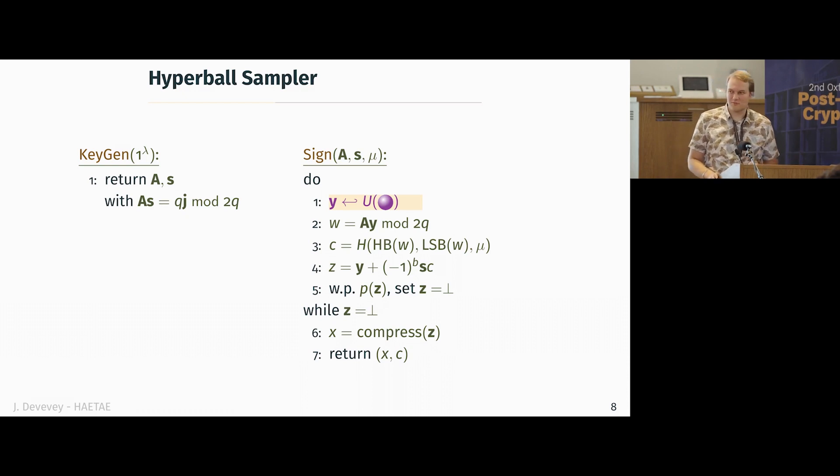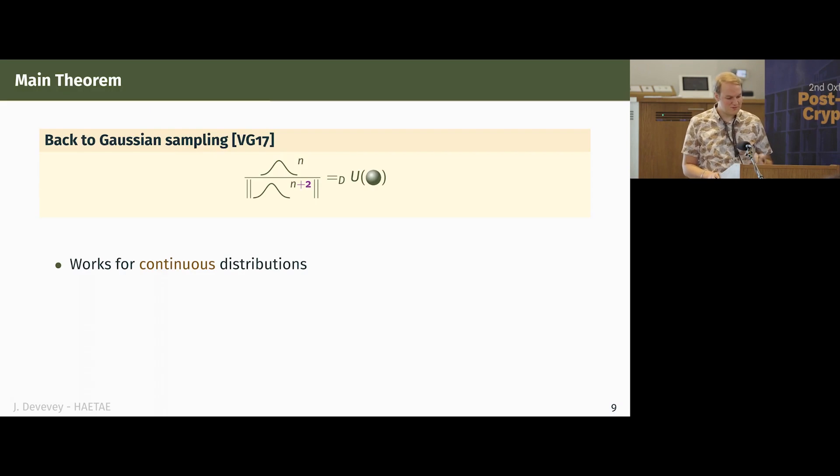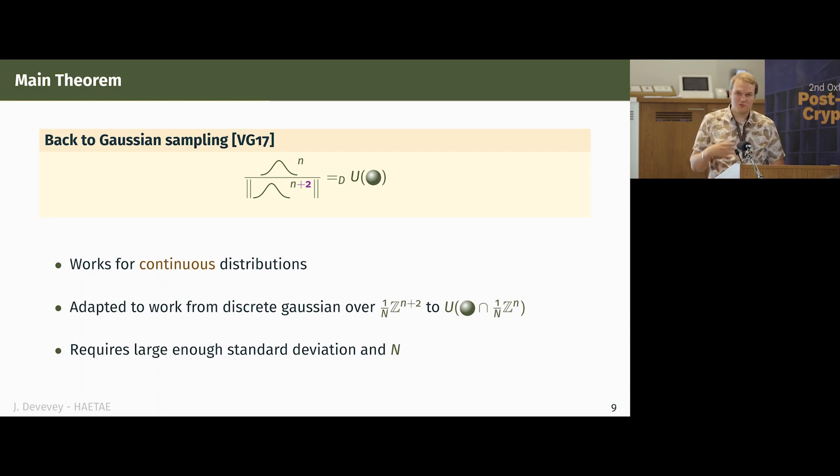There is still some kind of elephant in the room there. It's how do we actually sample from hyperbolic distributions? There is, in an ironic twist of fate, a result that says that if you take a normal distribution with two extra coordinates, normalize it, and then get rid of these two extra coordinates, you get something that's uniform in the hyperball due to some projective geometry results. So this works for continuous distribution. And what we do to work with fixed-point arithmetic is to sample actually from discrete Gaussians with a very large standard deviation. And then we have some discretization step for the hyperball.